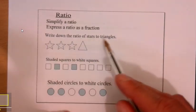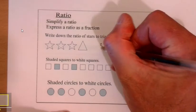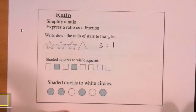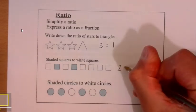Write down the ratio of stars to triangles. There's three stars, there's one triangle, so the ratio is three to one. That's all it means. Shaded squares to white squares: two shaded squares.